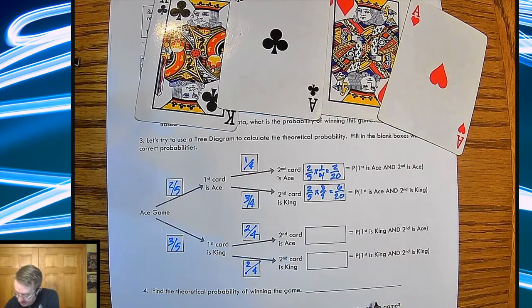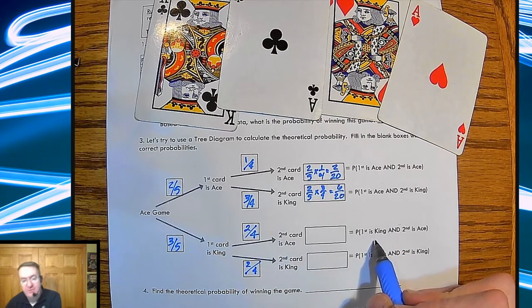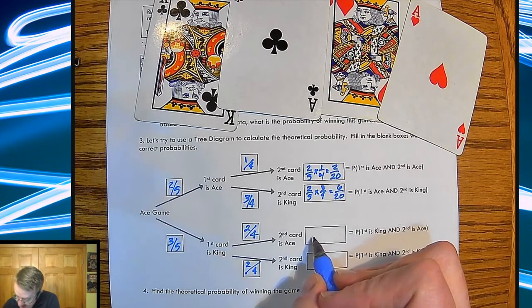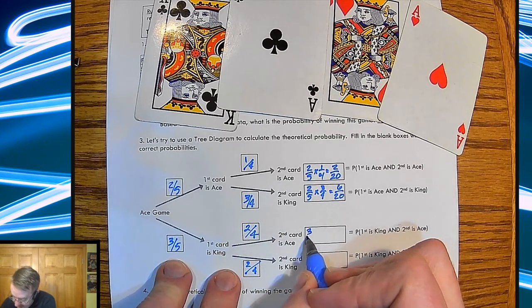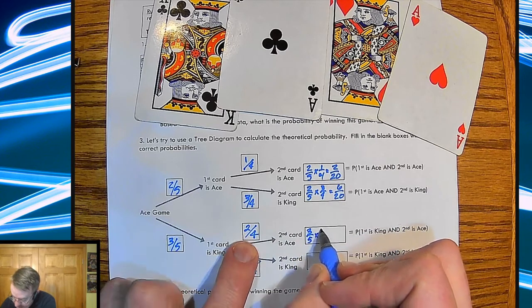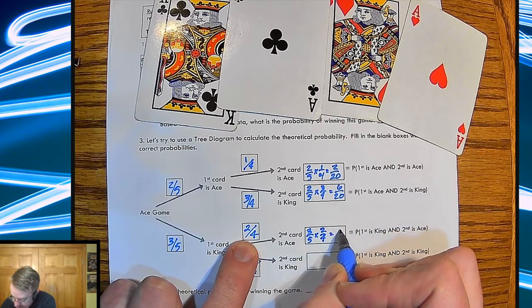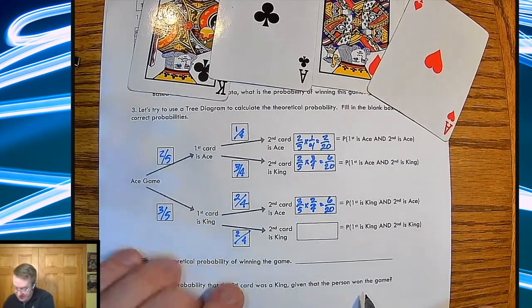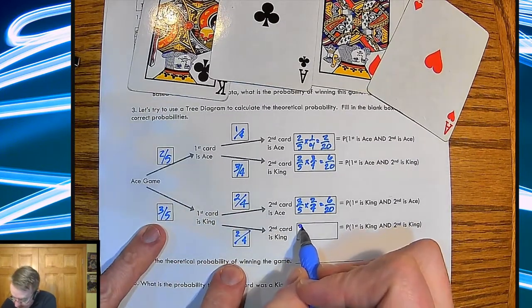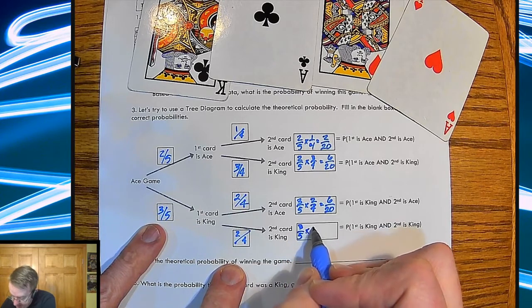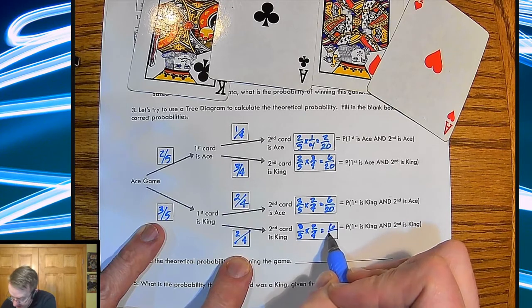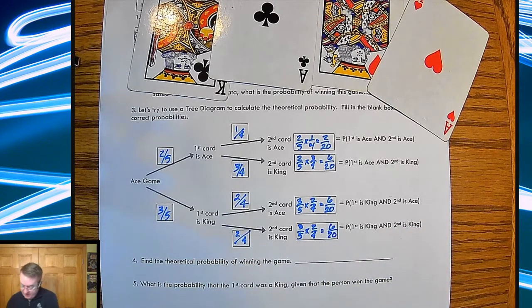So then the probability is up over here. So the probability of getting first a king and then a second... the first a king and then in a second is going to be three fifths times two fourths, that's going to be six out of twenty. And you're going to do the same thing down here and get the same probability: three fifths times two fourths and get six out of twenty.